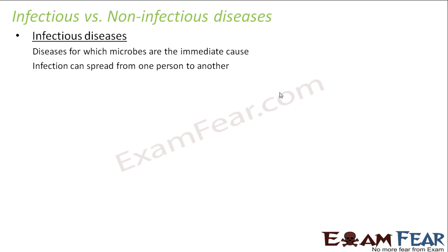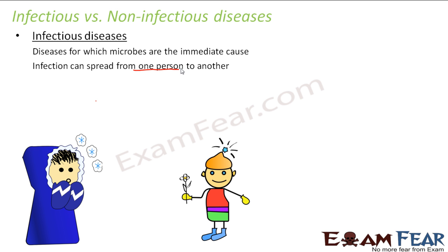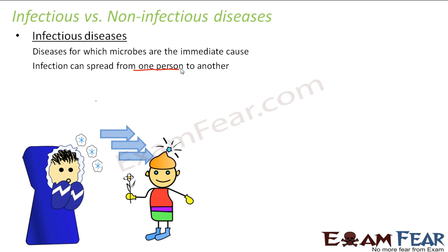In infectious diseases, infection can spread from one person to another - this is very important. That is why these diseases are known as infectious diseases. You would have seen that many such diseases, if they happen to one family member, keep happening to all of them turn by turn. For example, if a small girl suffering from cold is sneezing and coughing, and another girl spends a lot of time with her, the infection tends to reach the second girl and she also gets cold.